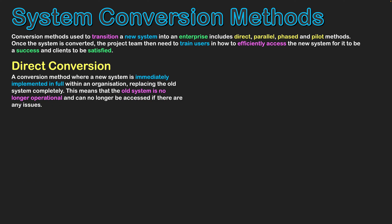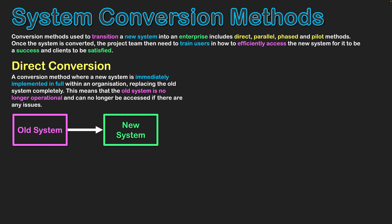We're going to start with the direct conversion method first, which is a conversion method where a new system is immediately implemented in full within an organization, replacing an old system completely — out with the old, in with the new. This means that the old system is no longer operational and can no longer be accessed if there are any issues. Data will be backed up so the data will probably be safe, but if there is an issue with the system we can't hop back to the old system, because we have directly converted. If we represent this with a diagram, we've got the old system and we go straight away to the new system — old system's gone. That is the logic of the direct conversion approach.